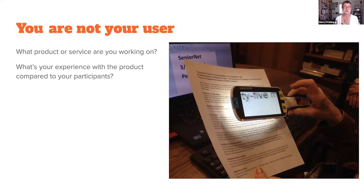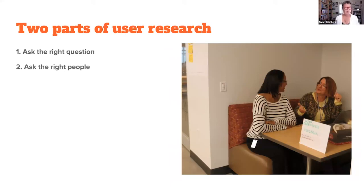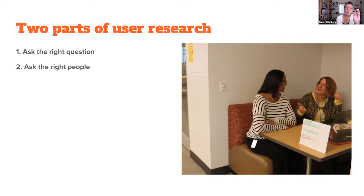Two parts of user research: ask the right question, and ask it of the right people. Your expertise comes in when you define the problem in a way that's answerable. Stakeholders will say 'I need to know X,' and you push back: what do you really want to find out? Why do you want to know X? I think we can frame the question more narrowly and specifically, and therefore get more informative answers. The 'right people' could be current product users, people who've never heard of it, or just anyone on the street to see if anybody can figure it out.